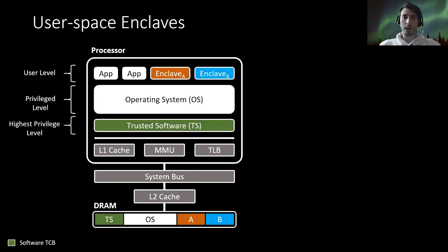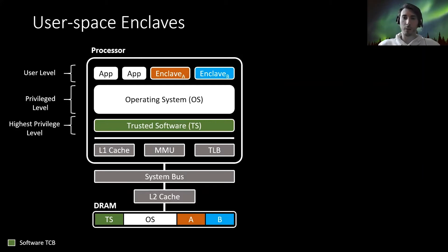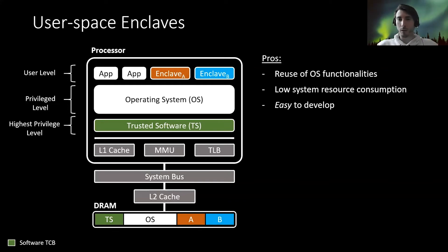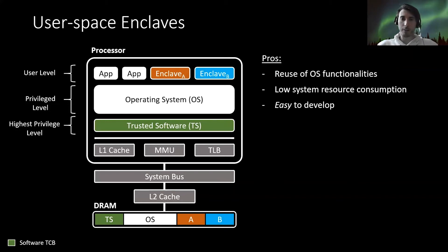We assume a trusted software component running in the highest privilege level to set up the enclaves and configure the hardware security primitives. The pros of user space enclaves are that we can reuse OS functionality since all enclaves share the operating system, resulting in lower system resource consumption. The enclaves themselves are rather small and easy to develop, since the enclave developer only has to port their sensitive service to the enclave without implementing any additional runtimes.